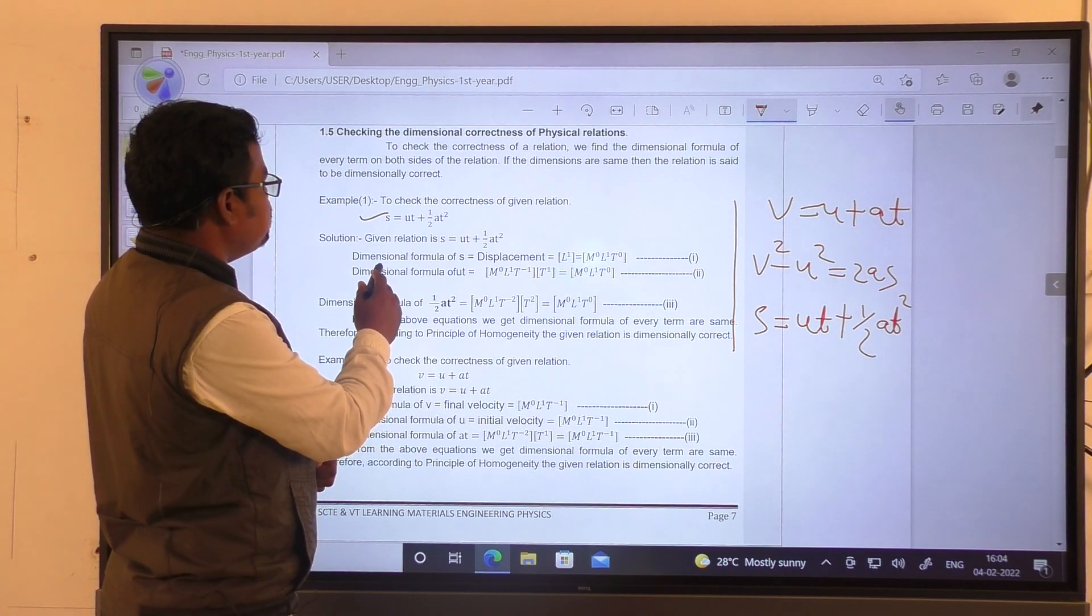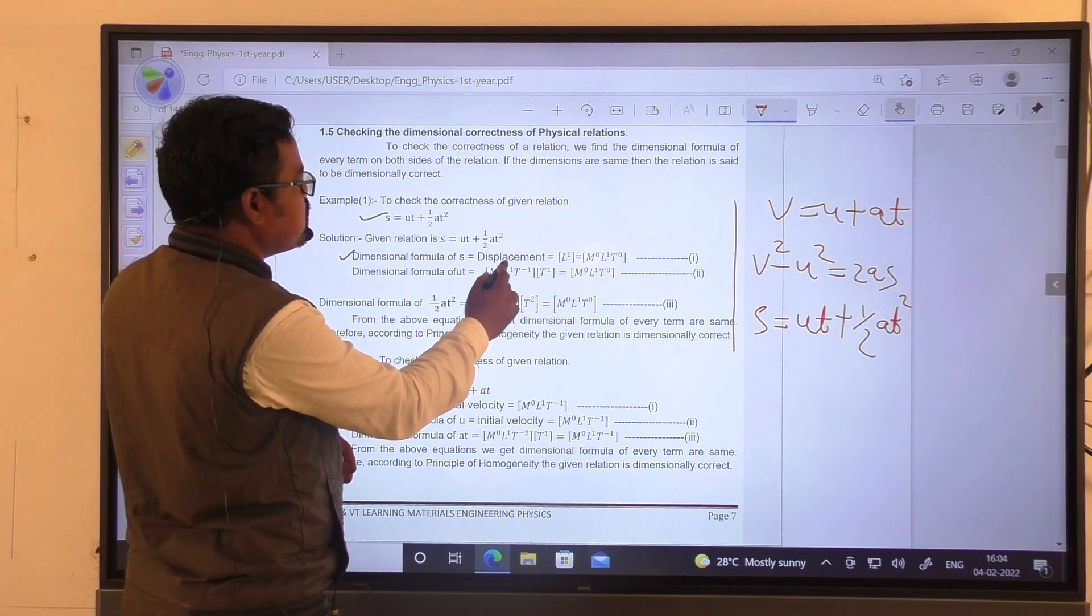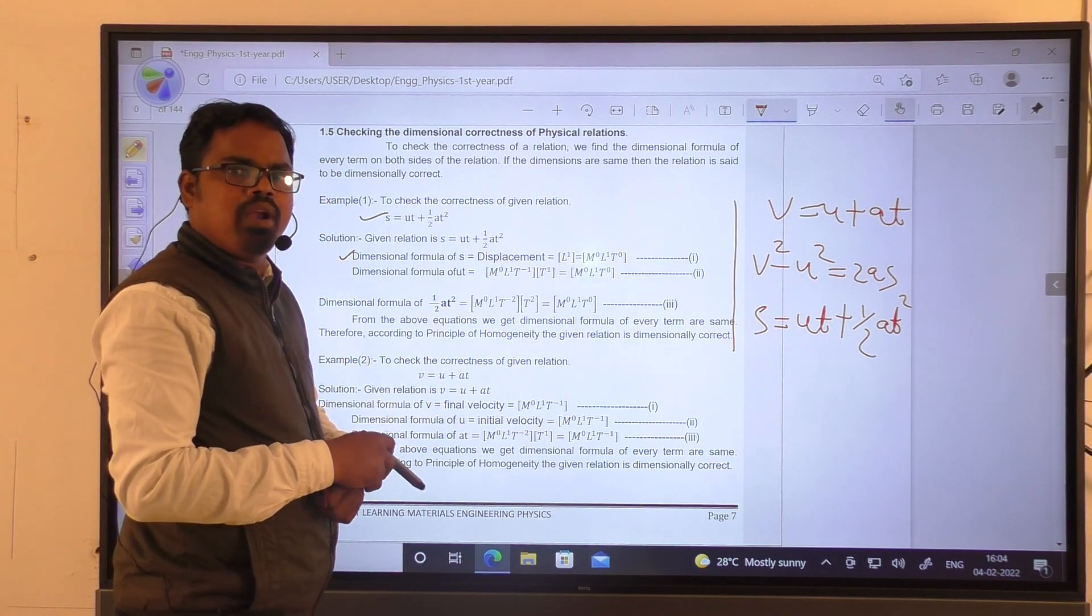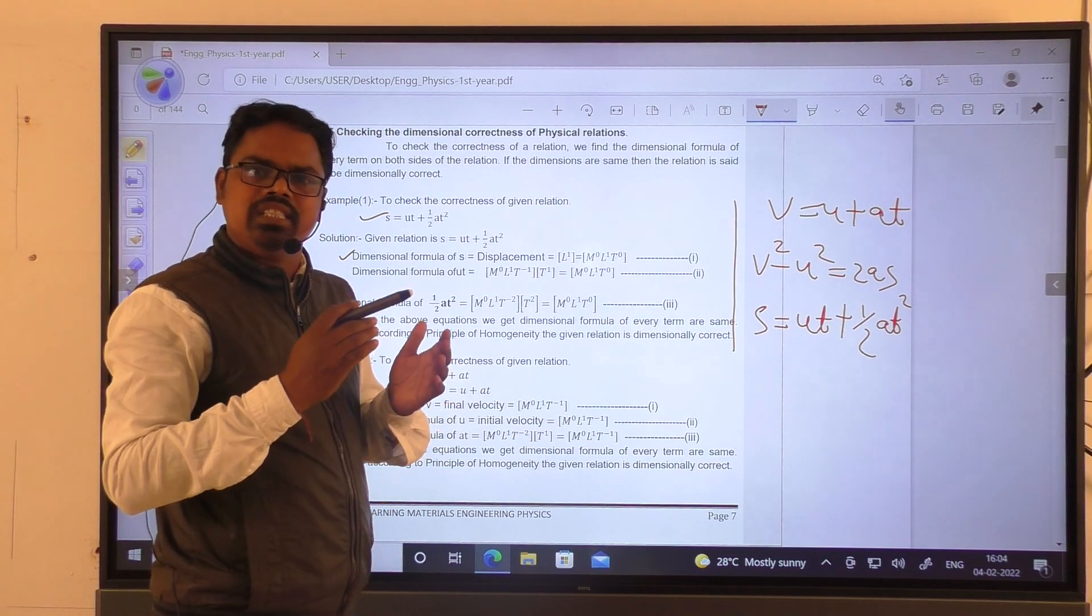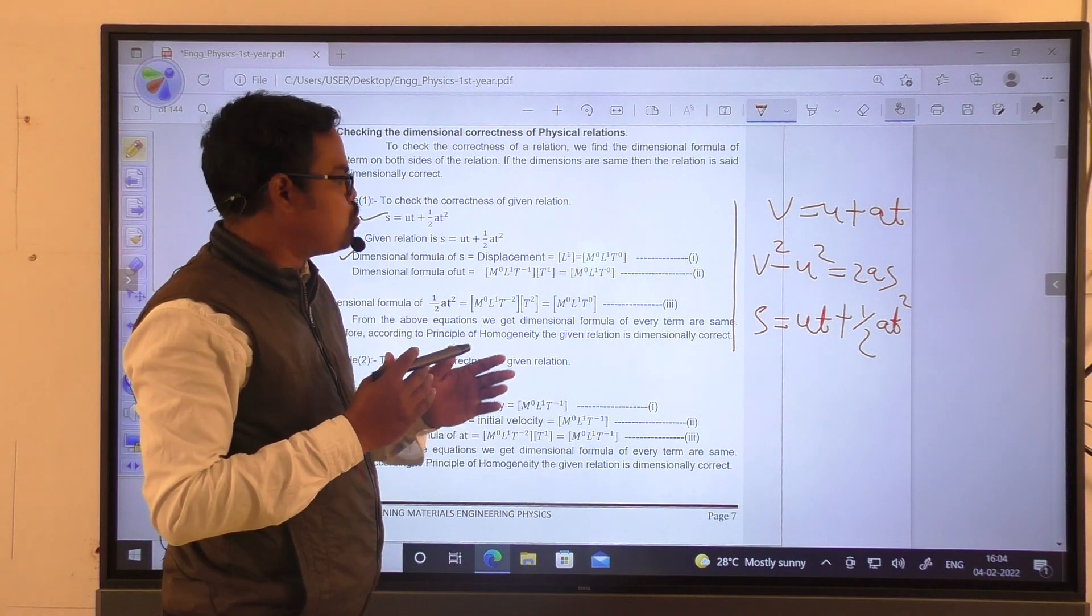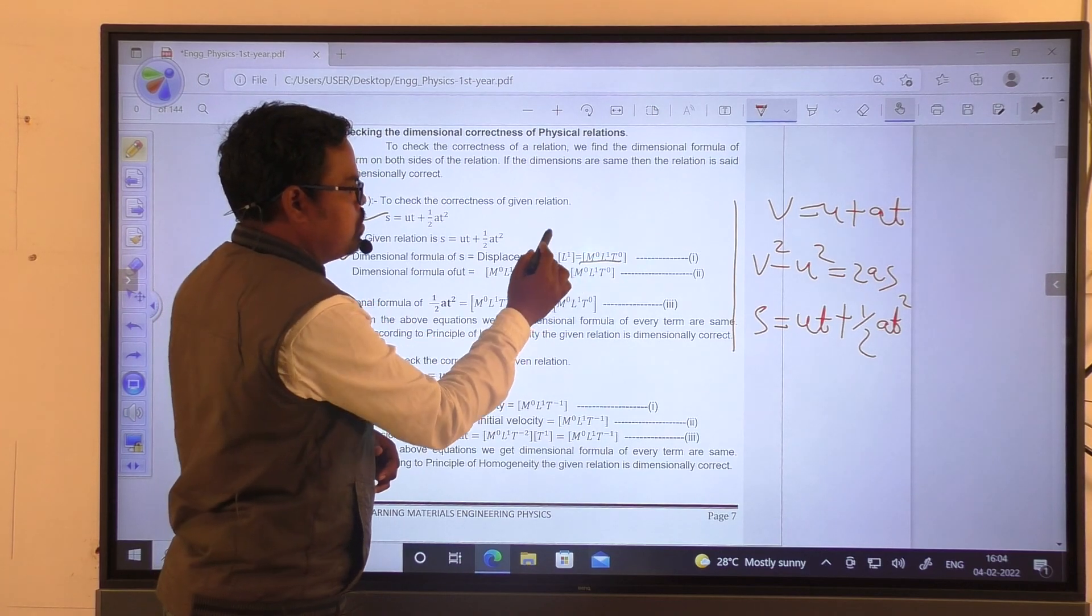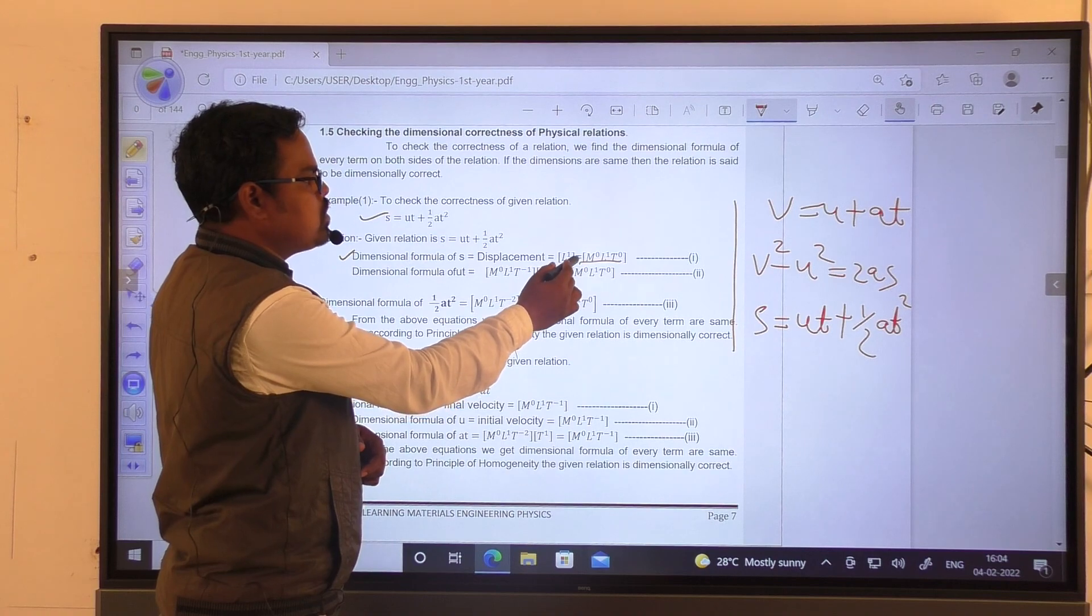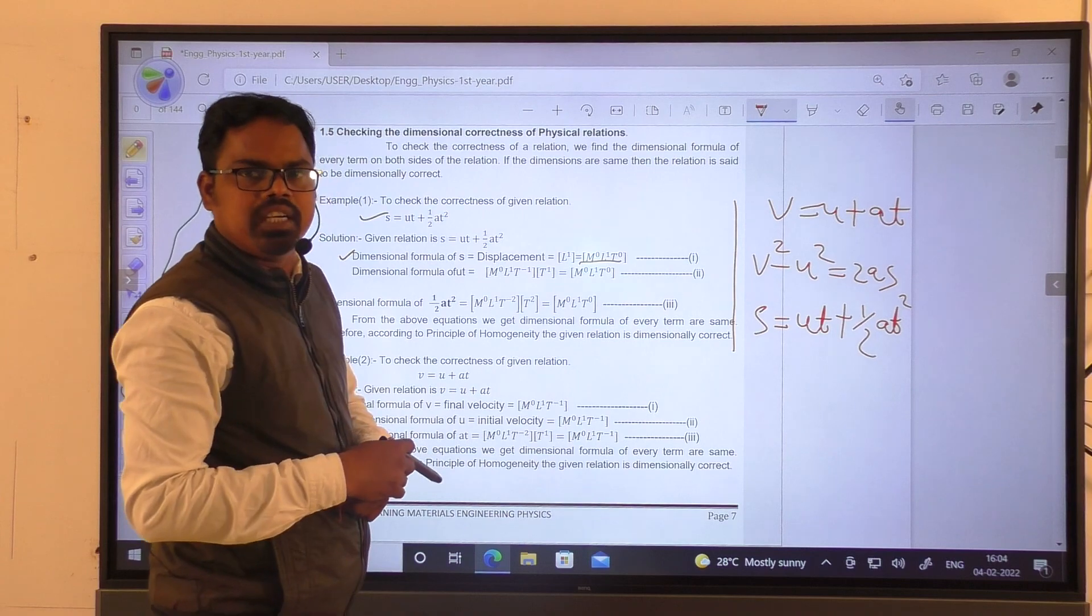Dimensional formula for displacement becomes L¹. Dimensional formula for every physical quantity must be represented in three fundamental quantities such as mass, length, and time. So I have written M⁰L¹T⁰. Here dimensions of S becomes 0, 1, and 0 in mass, length, and time respectively.